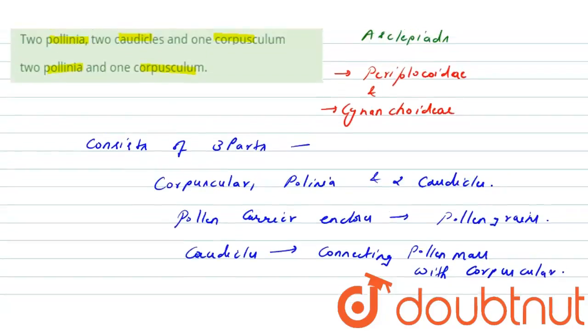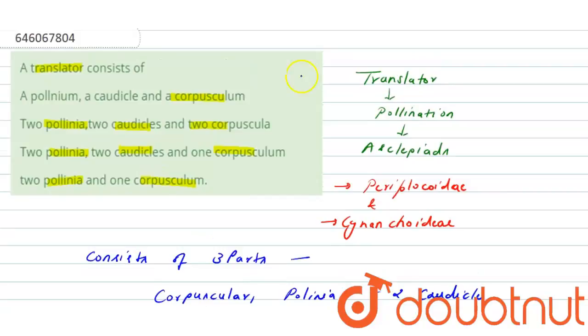Here, in this type of translator or this type of special type of pollination which achieves in these two sub-families of Asclepiadaceae, in this type of pollination there are two pollinia, and two corticles and one corpusculum.